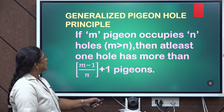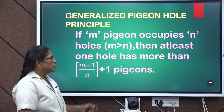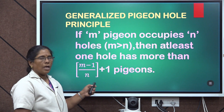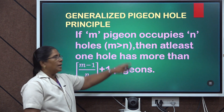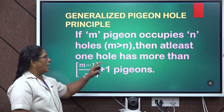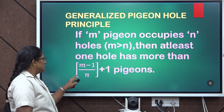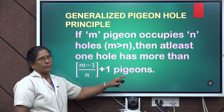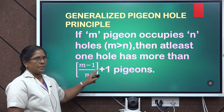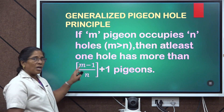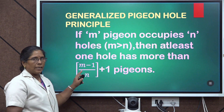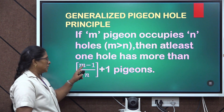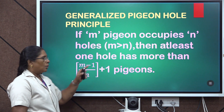This principle can be generalized. Suppose we consider m as the number of pigeons and n as the number of holes, and m must be greater than n. Then at least one hole has more than the integral part of (m minus 1) by n, plus 1 pigeon. The integral part means while evaluating this value, you consider only the integer part and ignore the decimal part.